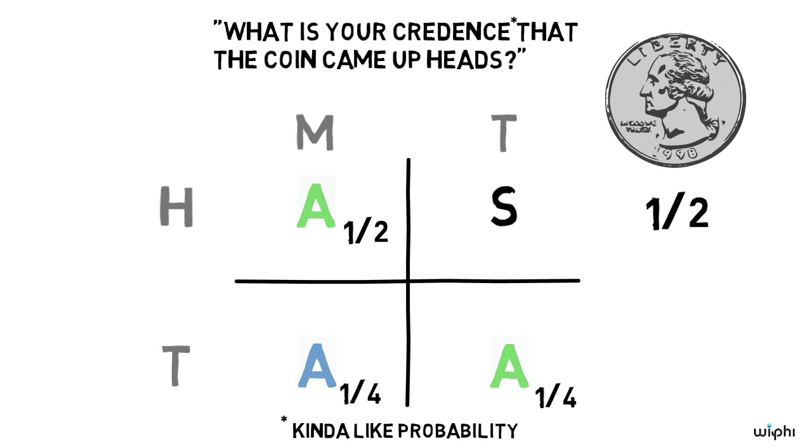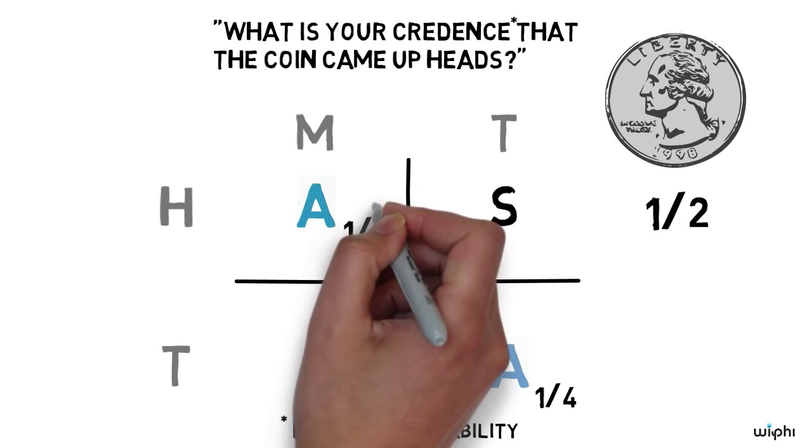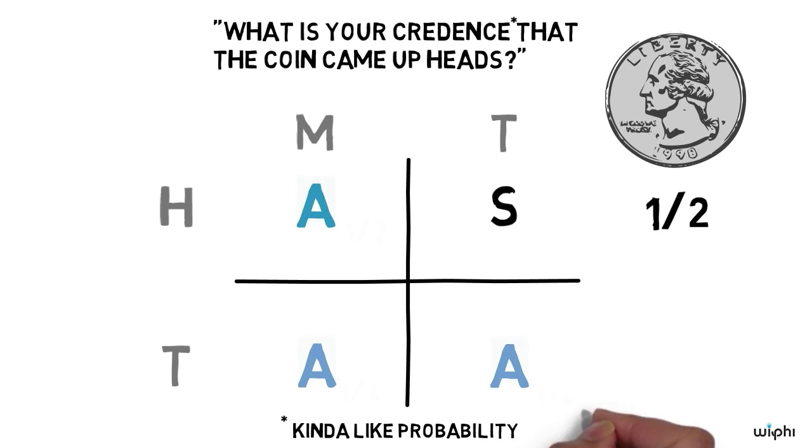So given that there are three possible awakenings and only one of them happens when the coin comes up heads, it seems like there is a one in three chance that on any given awakening it's a heads awakening.